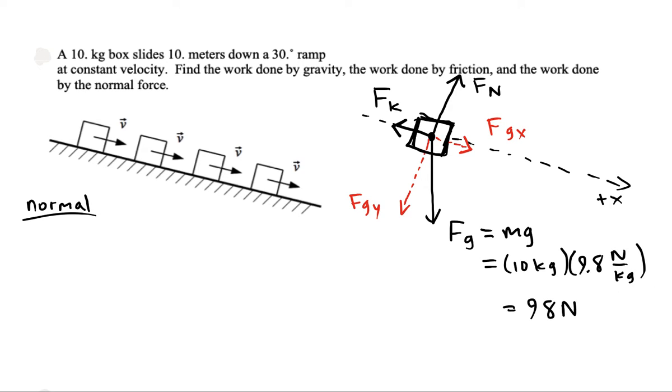All right so it's a 98 newton weight. If that's 98, then we're on a 30 degree angle ramp so Fgx will be given by 98 sin 30° which is 49. And so for a constant velocity then the kinetic friction has got to be 49 too, they have to balance. Fgy will be 98 cos 30° which is 84.9, and that means that Fn is 84.9 newtons because they have to balance.